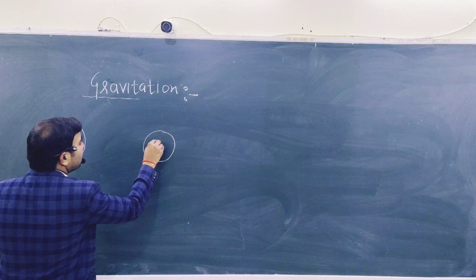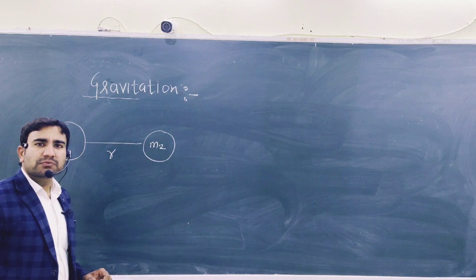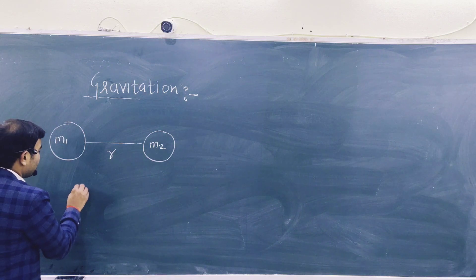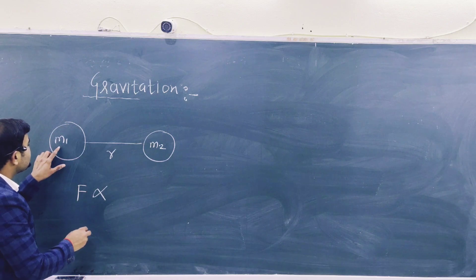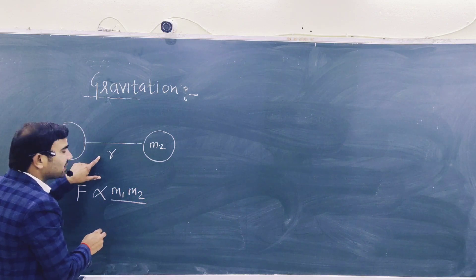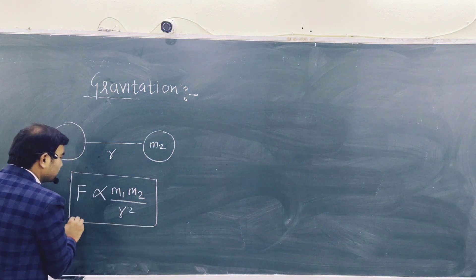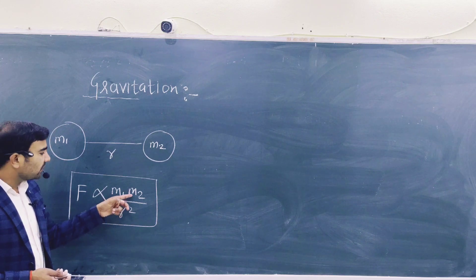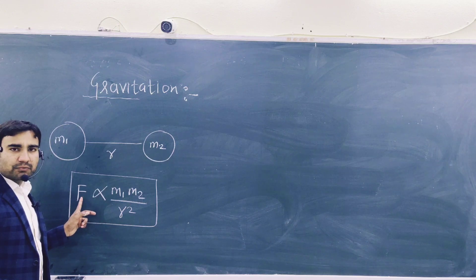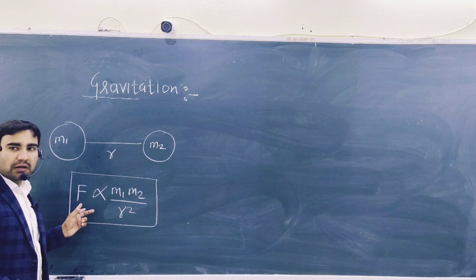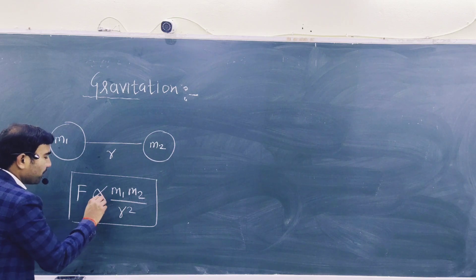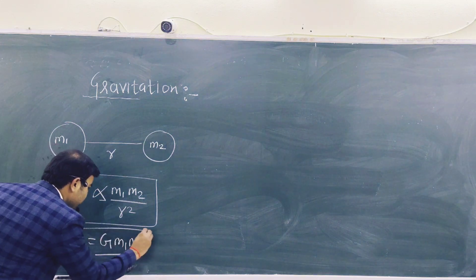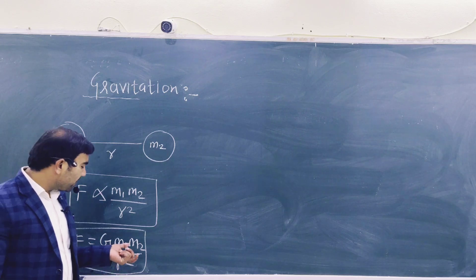This body has mass m1, and this body has mass m2, separated by distance r. According to Newton's law of gravitation, every body attracts every other body. The gravitational force is directly proportional to the product of their masses M1 and M2, and inversely proportional to the square of the distance R between them. So we can write: F = G × M1 × M2 / R².